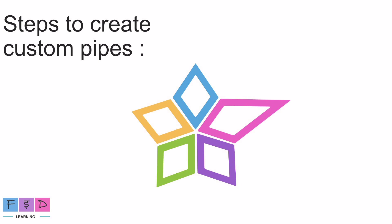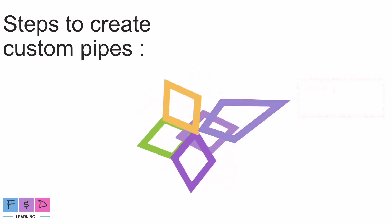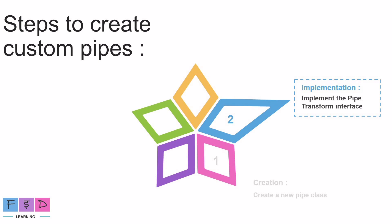Now let's discuss the steps to create a custom pipe. The first step is creation — we need to create a new pipe by either creating a new file or using the Angular CLI command ng generate pipe pipe-name. If we create a new file for the pipe, then we need to implement the second step, which is to implement the PipeTransform interface by adding the transform method to the pipe class.